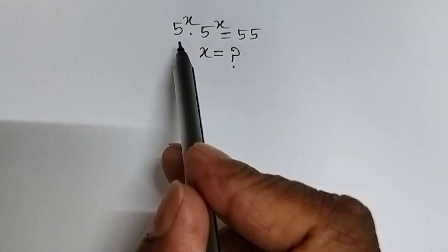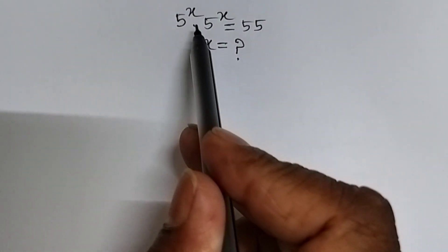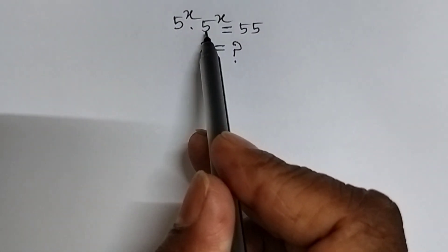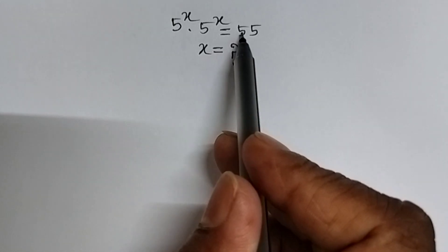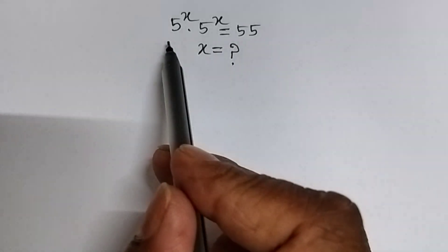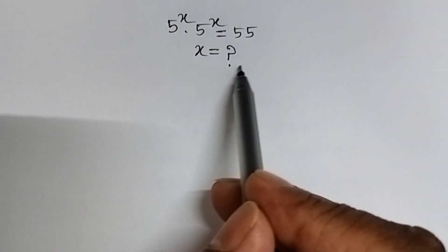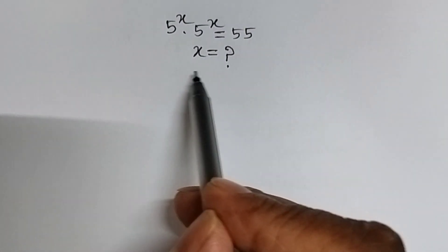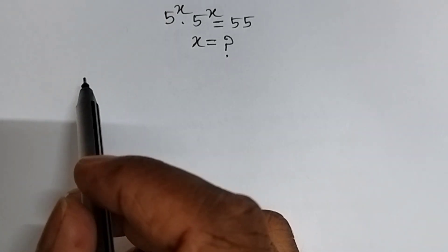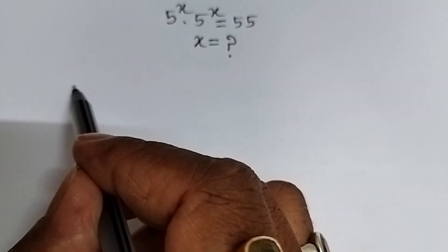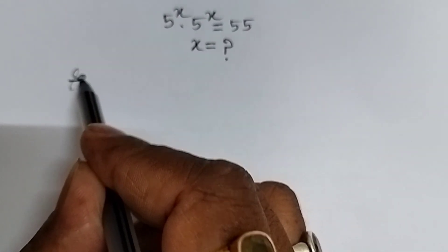Our given question is 5 power x times 5 power x equal to 55. We will have to find the value of x. It's very easy — let's see the solution.